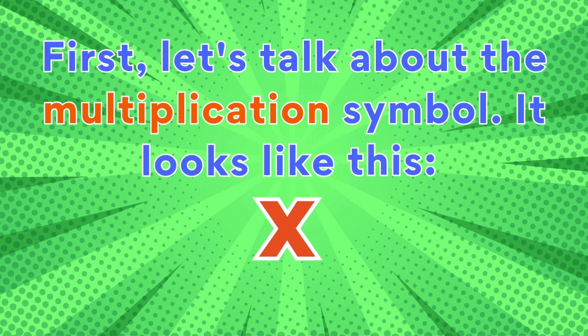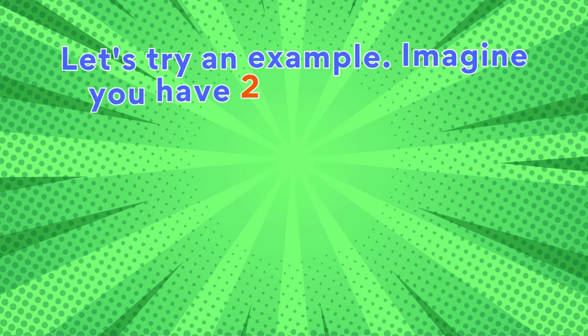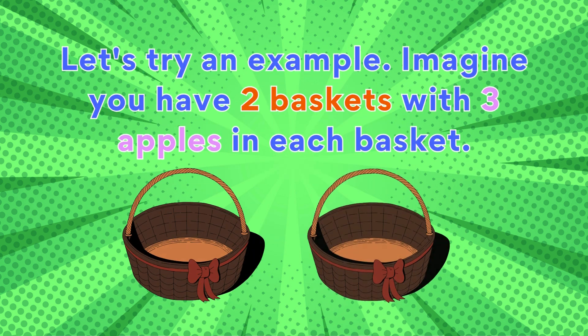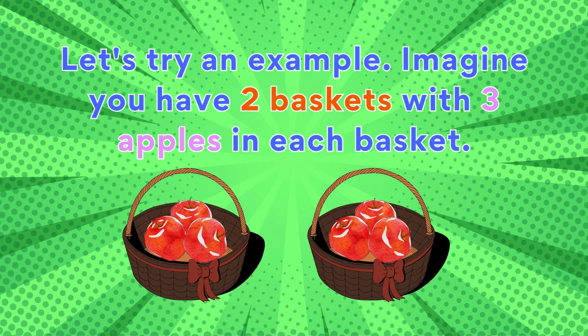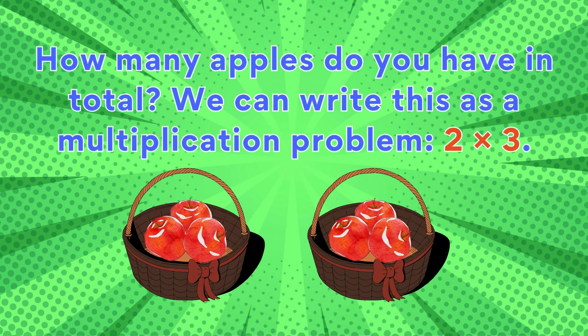First, let's talk about the multiplication symbol. It looks like this: times. When we see this symbol, it means we need to multiply two numbers together. Let's try an example. Imagine you have two baskets with three apples in each basket. How many apples do you have in total? We can write this as a multiplication problem: two times three.